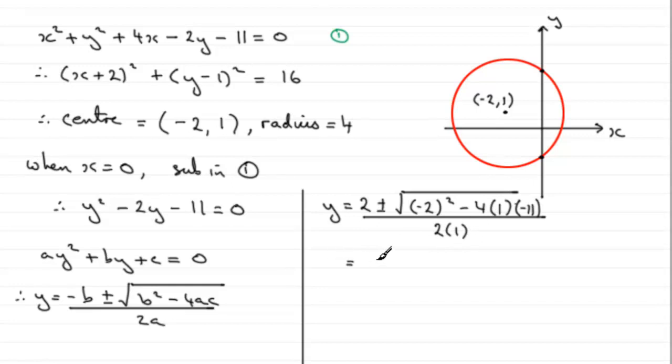So what have we got? We've got 2 plus or minus, and as for the square root here, this is going to be 4 plus 44. In other words, 48, the square root of 48.